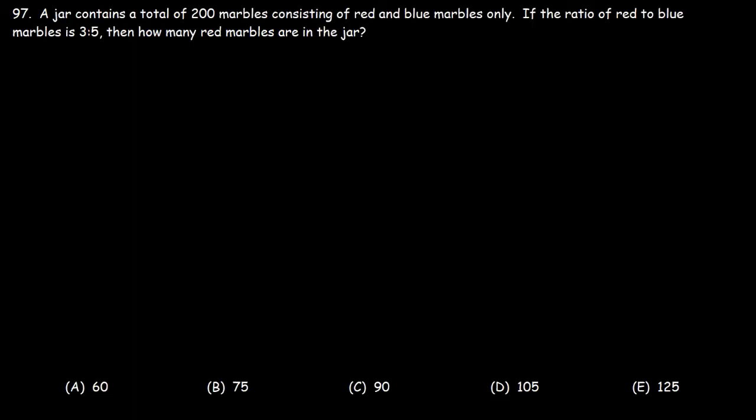So what do you think we need to do in order to solve this particular problem? We're given a ratio between red and blue marbles, but how can we use that ratio to calculate the number of red marbles? What we can do is set up a proportion. We're going to set up a proportion between the red marbles, the blue marbles, and the total number of marbles in the jar.